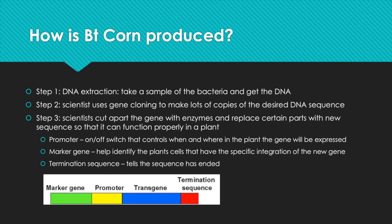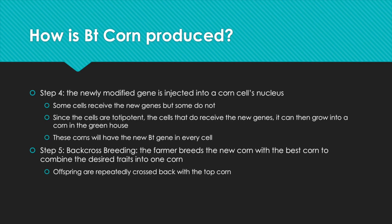Step four: the newly modified gene is injected into the corn cell's nucleus. Some of the cells receive the new genes but some do not. Since the cells are totipotent, the cells that do receive the new genes can then grow into a corn in the greenhouse, and these corns will have the new BT gene in every cell. The last step is called backcross breeding. The farmer breeds the new corn with the best corn to combine both desired traits into one corn, and their offspring are repeatedly crossed back to the top corn to make sure they are top quality.